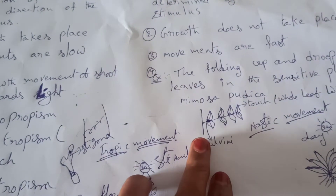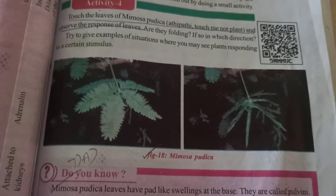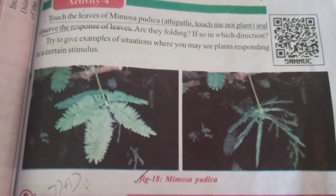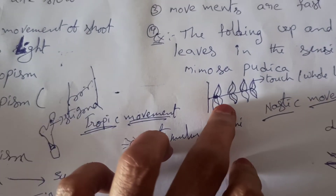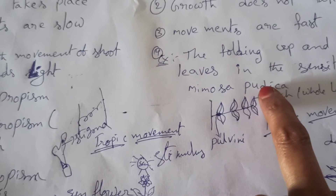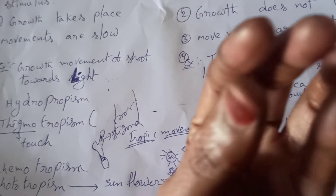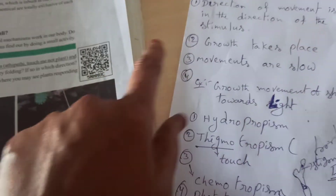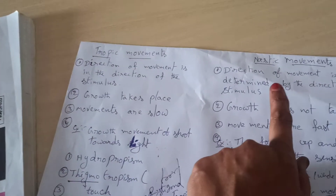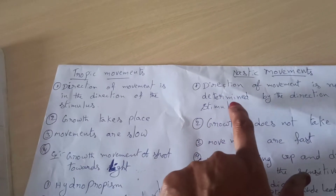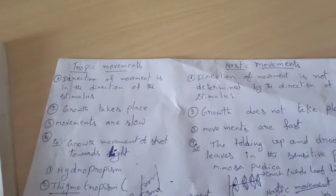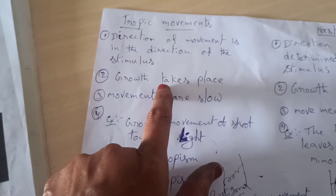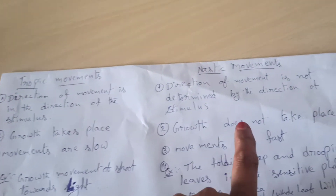Here is an example from our 10th class textbook — the Mimosa pudica plant. Here is the Mimosa pudica plant structure. When we touch one edge, the whole leaf will be folded and closed. Growth does not take place during this response.